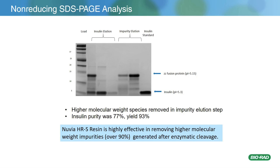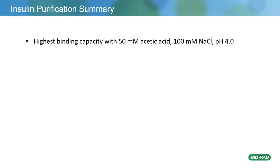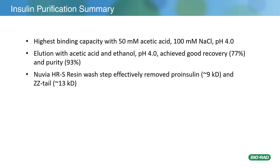This is the gel, and as you can see, the HRS does a really good job of cleaning up insulin from cleavage impurities. To summarize the insulin purification on Nuvia HRS, the highest binding capacity was found with 50 millimolar acetic acid, 100 millimolar sodium chloride, pH 4. Elution with acetic acid and ethanol at pH 4 achieved 77% recovery and 93% purity. Nuvia HRS does a really good job at removing closely related molecular weight contaminants — proinsulin is about 9 kilodaltons, and the ZZ tail is about 13 kilodaltons.